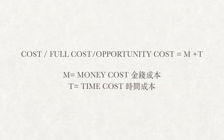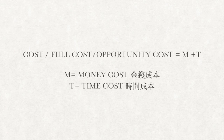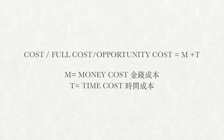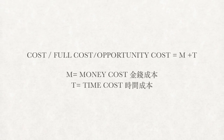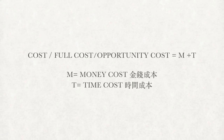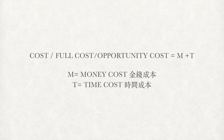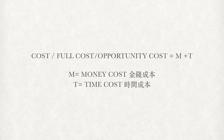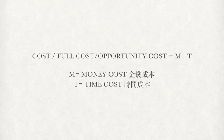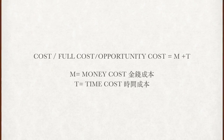There are two components in opportunity cost: money cost and time cost. Sometimes money cost will be called explicit cost and time cost will be called implicit cost. Opportunity cost is the sum of these two costs.